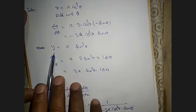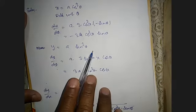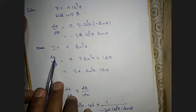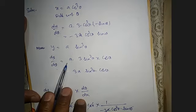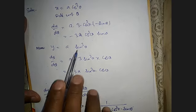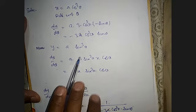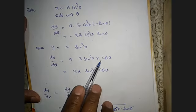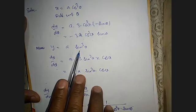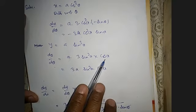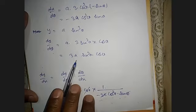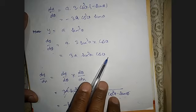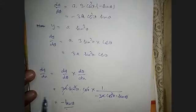Also, y = a·sin³θ. Differentiating with respect to θ: dy/dθ — a is a constant, sin³θ is again a power function, so 3·sin²θ, then by chain rule multiply by the derivative of sinθ, which is cosθ. So dy/dθ = 3a·sin²θ·cosθ.